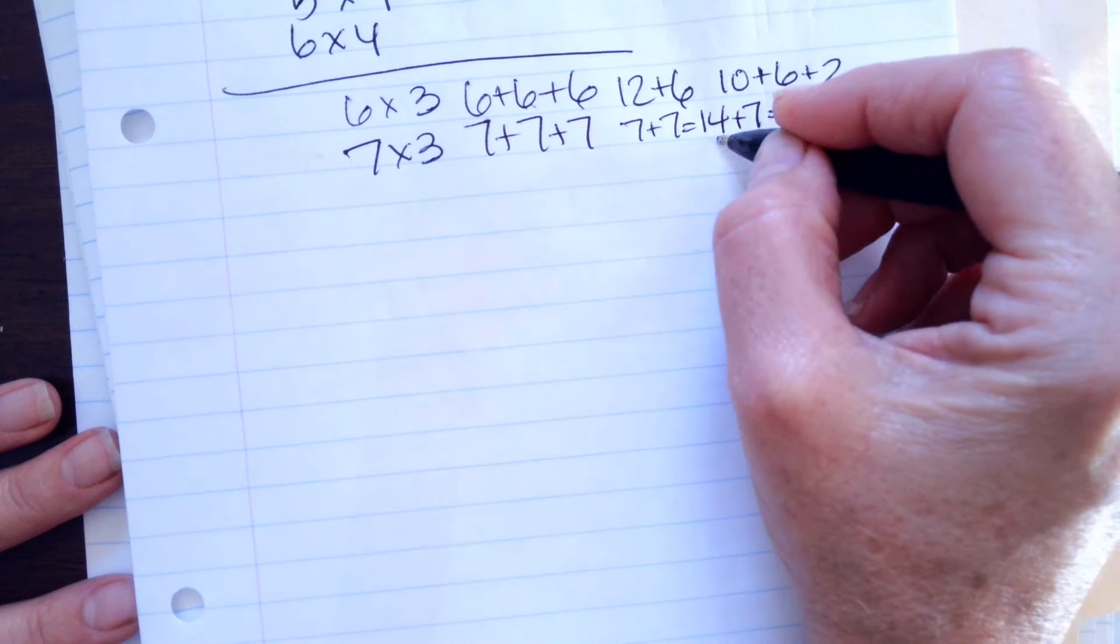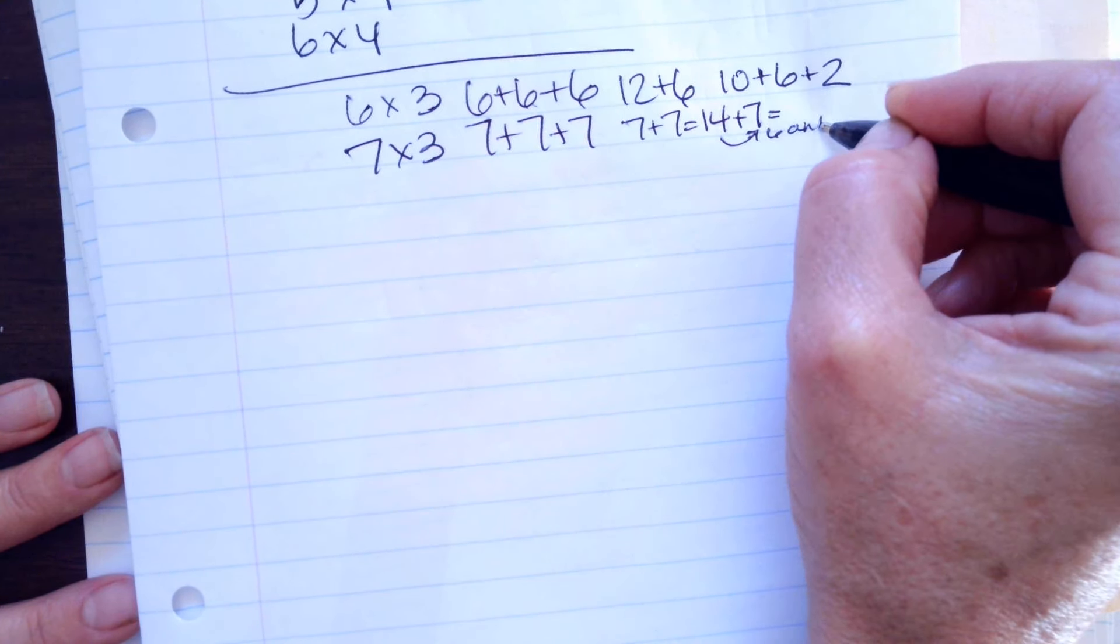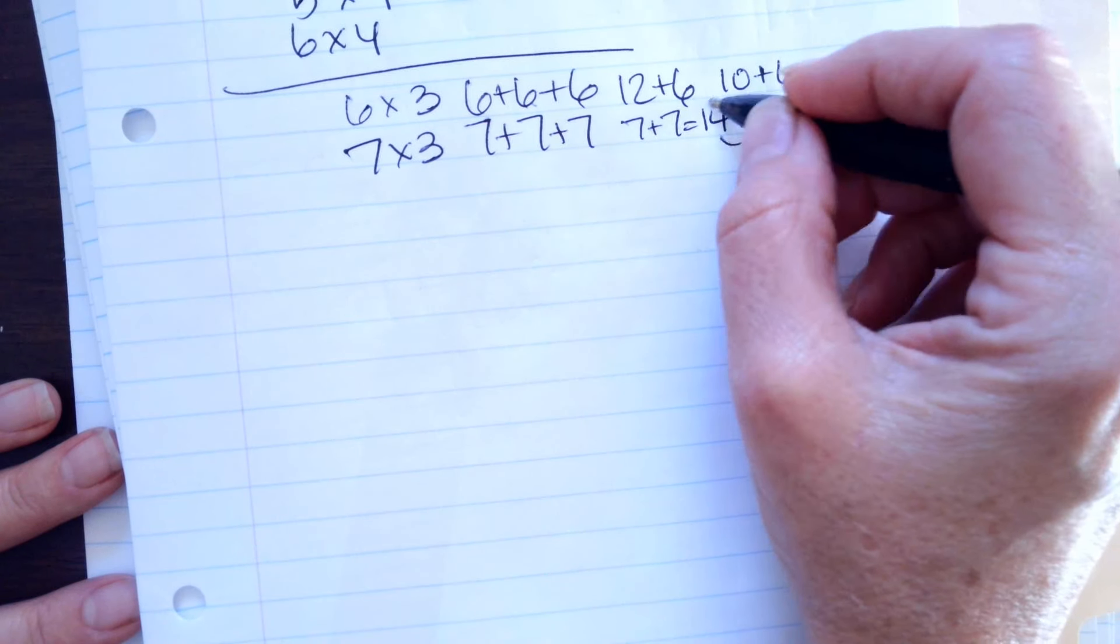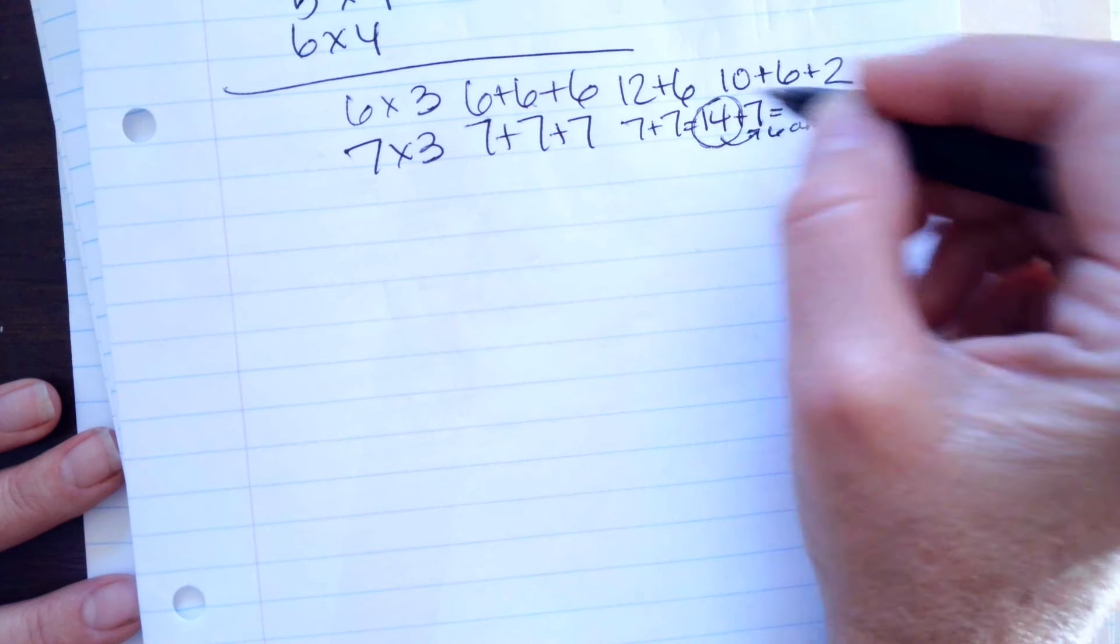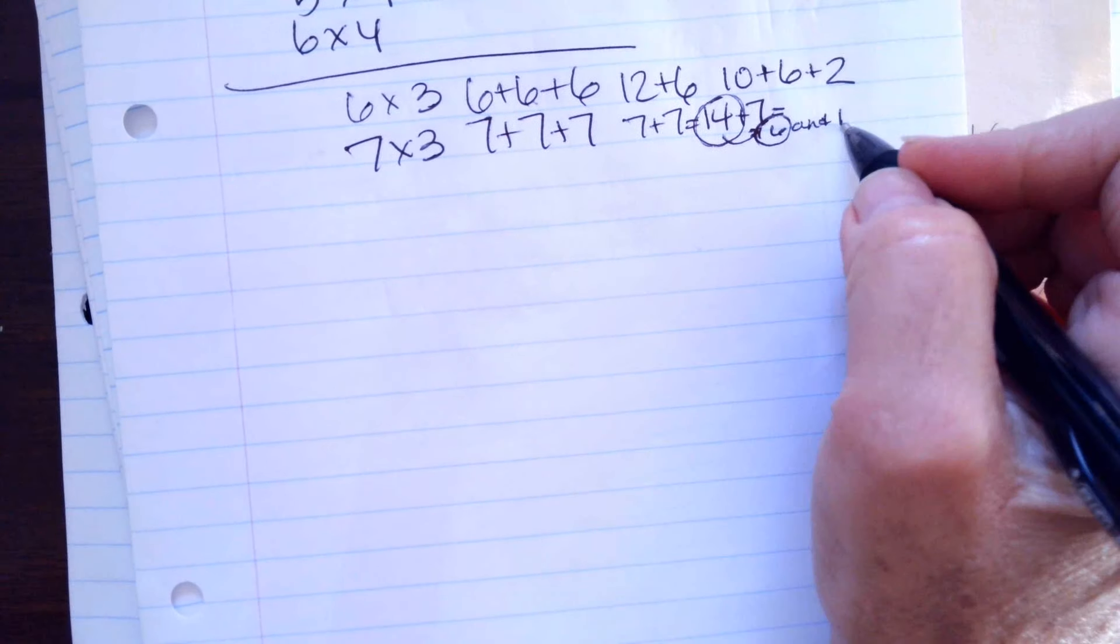Well I know if I change this into a 6 and a 1 this is going to make a group of 10 because 14 plus 6 is 20 plus 1 is 21.